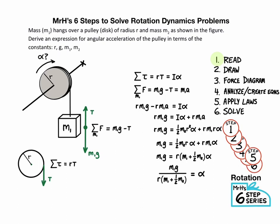Alright, let's try one with no numbers, only symbols. Mass M1 hangs over a pulley of radius R and mass M2, as shown in the figure. Derive an expression for the angular acceleration of the pulley in terms of constants R, G, M1, and M2.